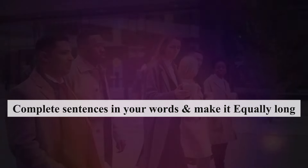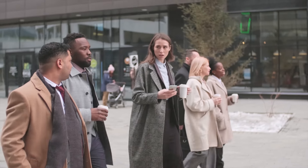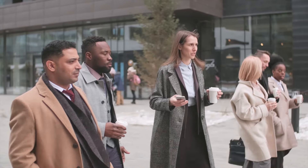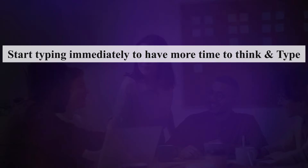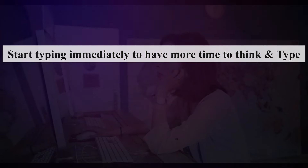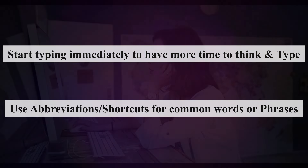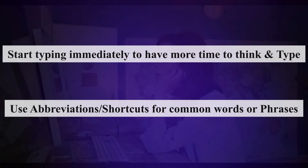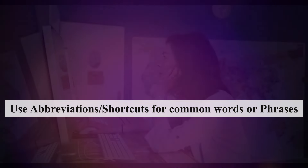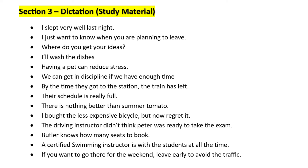For example, if the original sentence was 'a certified swimming instructor is with the students at all times' and you could not understand more than half of it due to accent issues, you can type something like 'swimming teacher told the students to come on time.' Try to be realistic — listen carefully and type exactly as you hear it. Another tip: start typing as soon as you hear the sentence. This gives you more time to think and type, increasing your chances of completing the sentence without forgetting it. You can also use personalized abbreviations or shortcuts for common words or phrases to type more efficiently. Let me share a few sample sentences — take a screenshot or pause to read them.